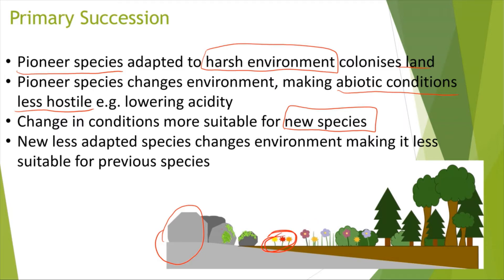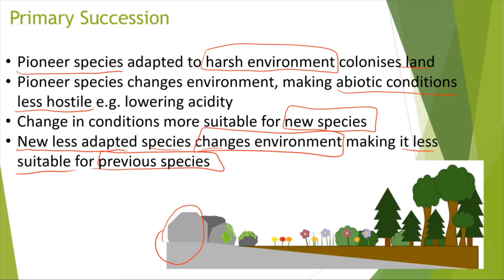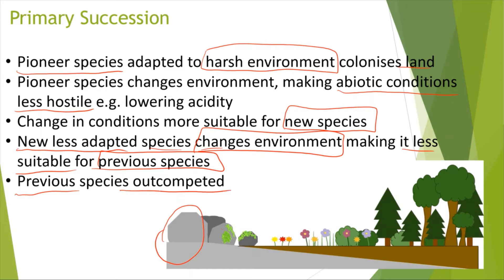The less adapted species, which are not really adapted to the harsh environments, can come along and survive. The new less adapted species in turn change the environment, so this makes it less suitable for the previous species. The pioneer species would no longer be able to live in those conditions because the conditions are less favourable for them now. Because the new less adapted species have changed the environmental conditions, the pioneer species are likely less adapted and would in turn die, and so the previous species, such as the pioneer species, would be out-competed.